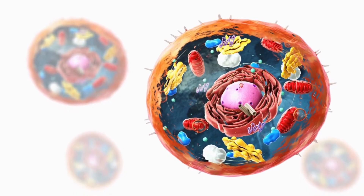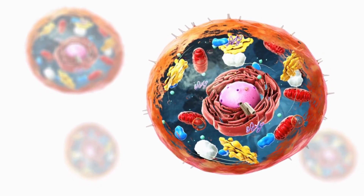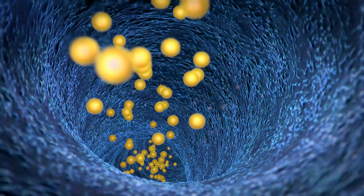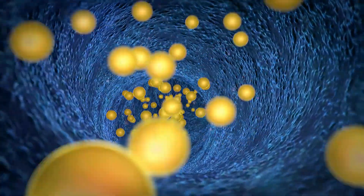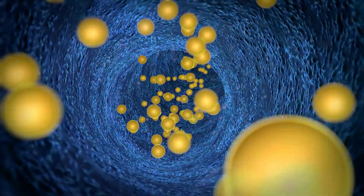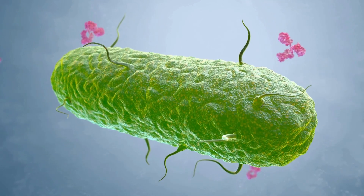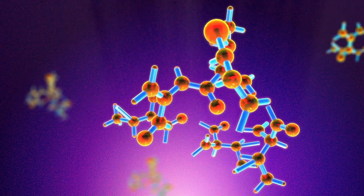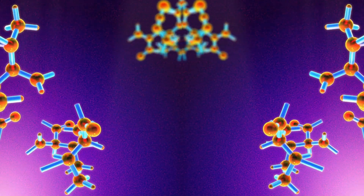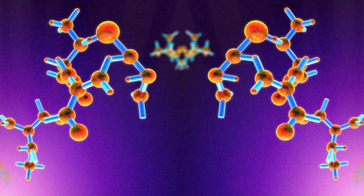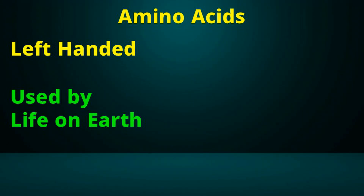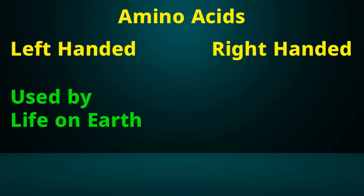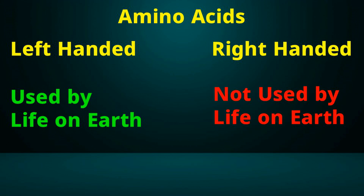Our bodies and cells are made up of various proteins. The chemical processes in our body, such as hormonal regulation and enzymatic activities, are controlled by proteins. Even the antibodies that protect us from diseases are proteins. These proteins are made up of different types of amino acids. Amino acids also come in left-handed and right-handed forms. However, all living organisms on earth exclusively use left-handed amino acids. Right-handed amino acids can also exist, but there are no known organisms that utilize them.